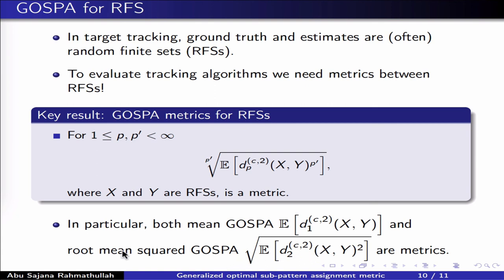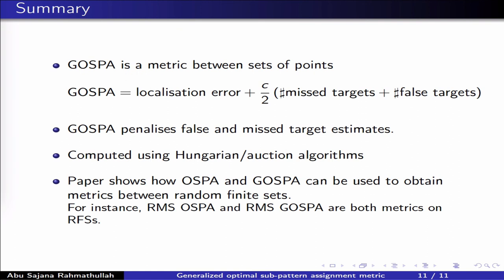In particular, this family includes important examples such as the mean GASPA and the root mean squared GASPA, where the root mean squared GASPA is closely related to the root mean squared error commonly used for vectors. To conclude, we've presented GASPA, which is a metric between sets of vectors that separates into a sum of three terms: localization error, missed targets, and false targets. GASPA penalizes false and missed target estimates, which corresponds to what traditional tracking literature encourages us to do. Those familiar with OSPA will know it can be efficiently computed using the Hungarian algorithm or the auction algorithm, and it is easy to modify an OSPA implementation to instead compute GASPA. We also intend to post a link to our own implementation of GASPA in the description of this video. We have also demonstrated how both OSPA and GASPA can be used to obtain metrics between random finite sets. Thanks for listening.